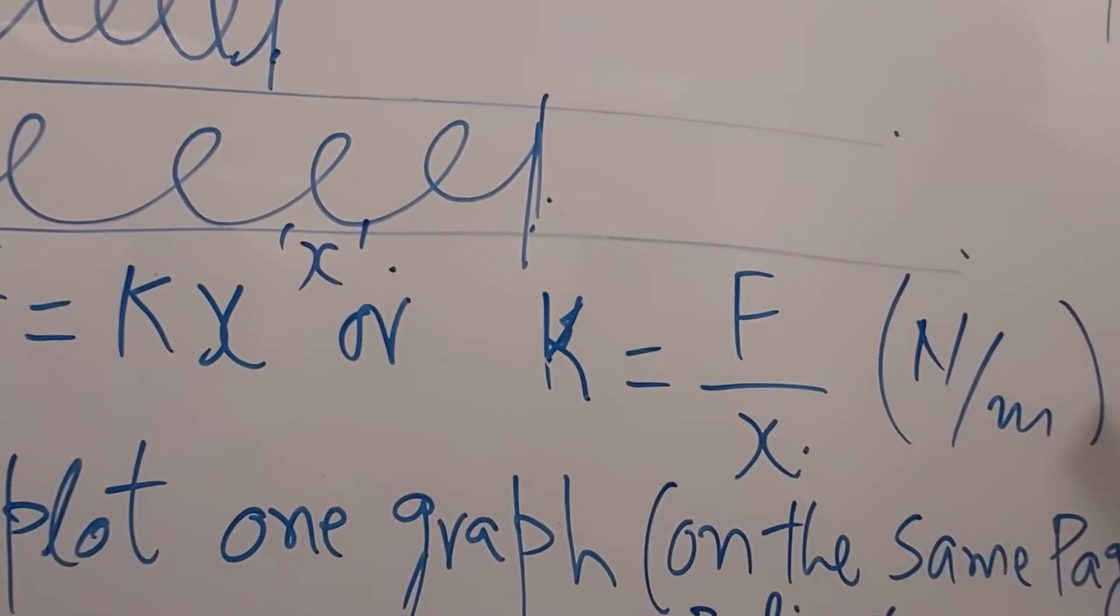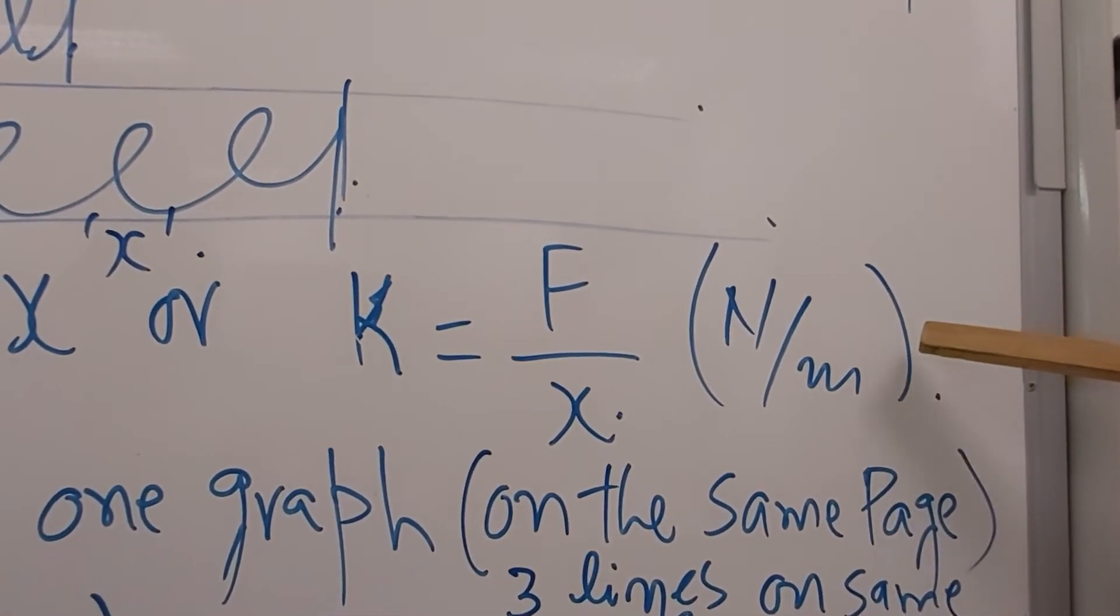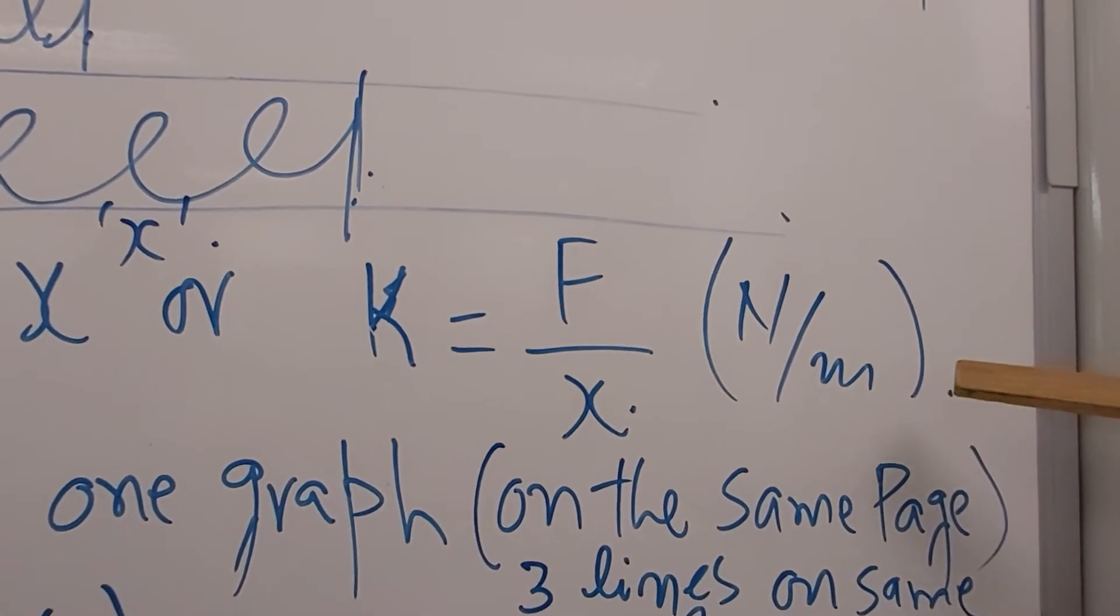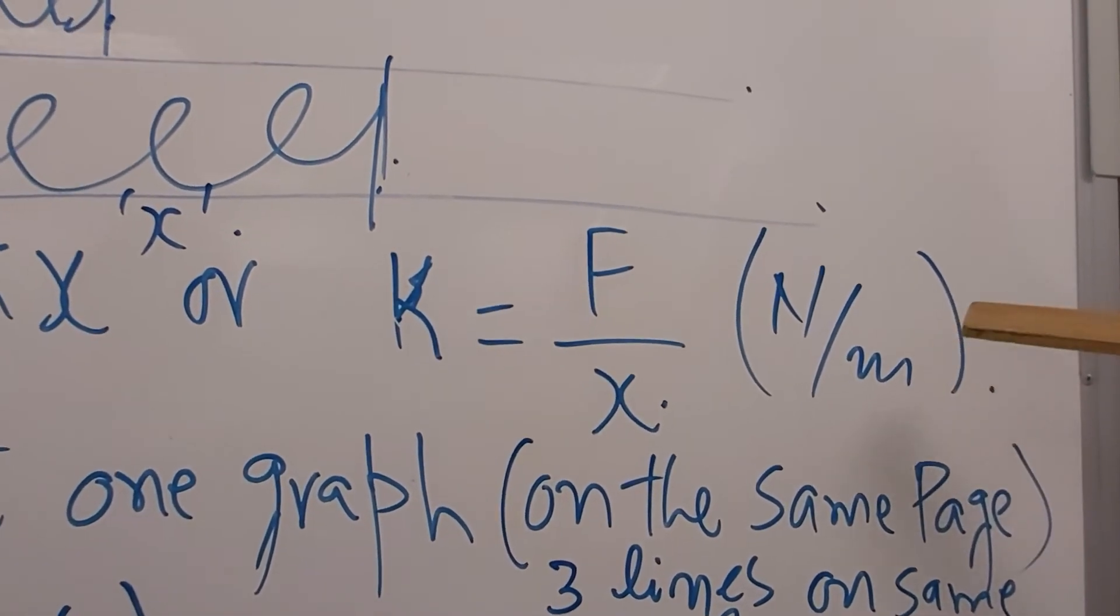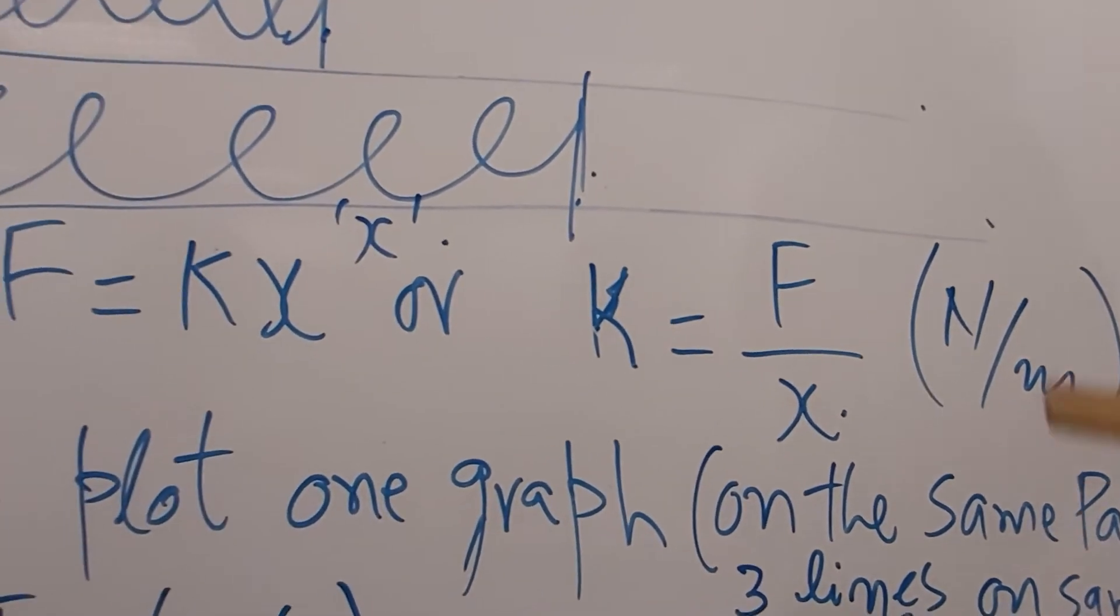Do this in SI units. You may be recording data in centimeters, but convert that centimeter into meter and then you can get the spring constant k in newton per meter.